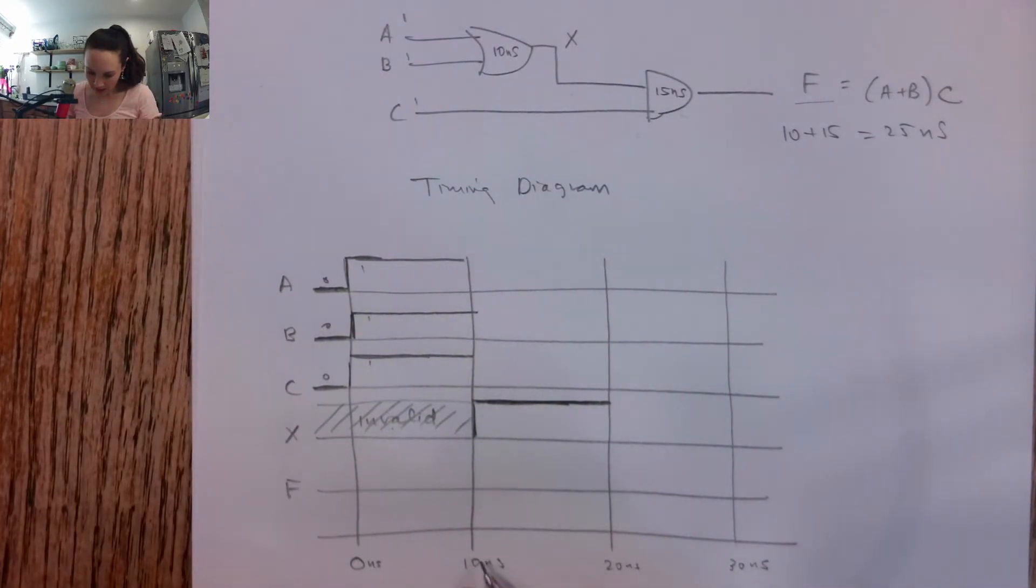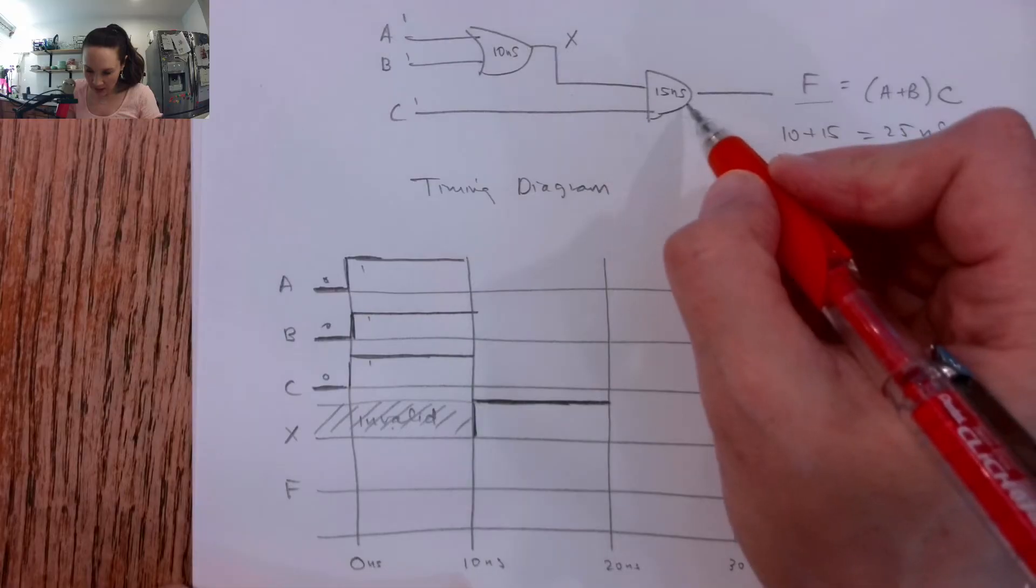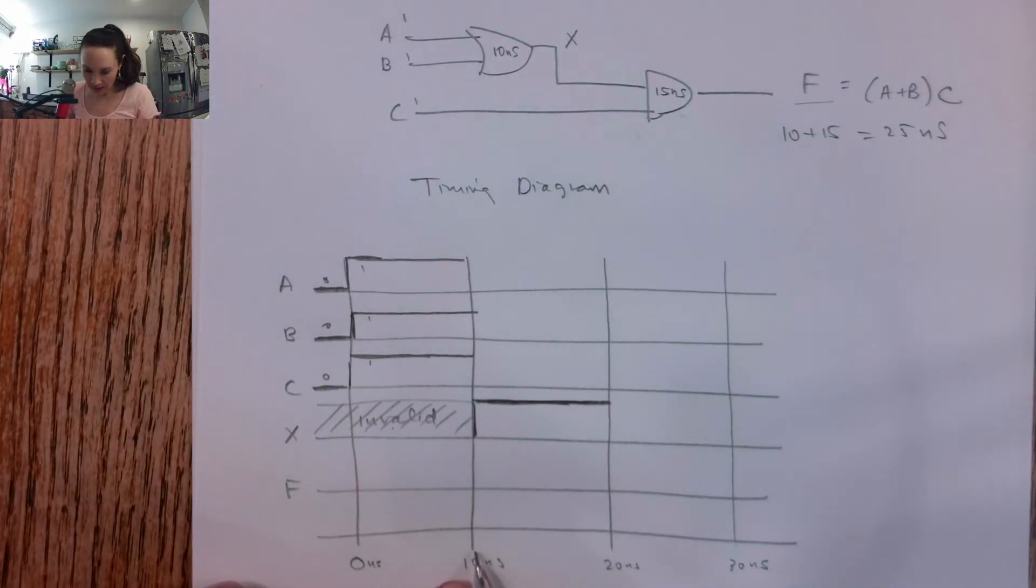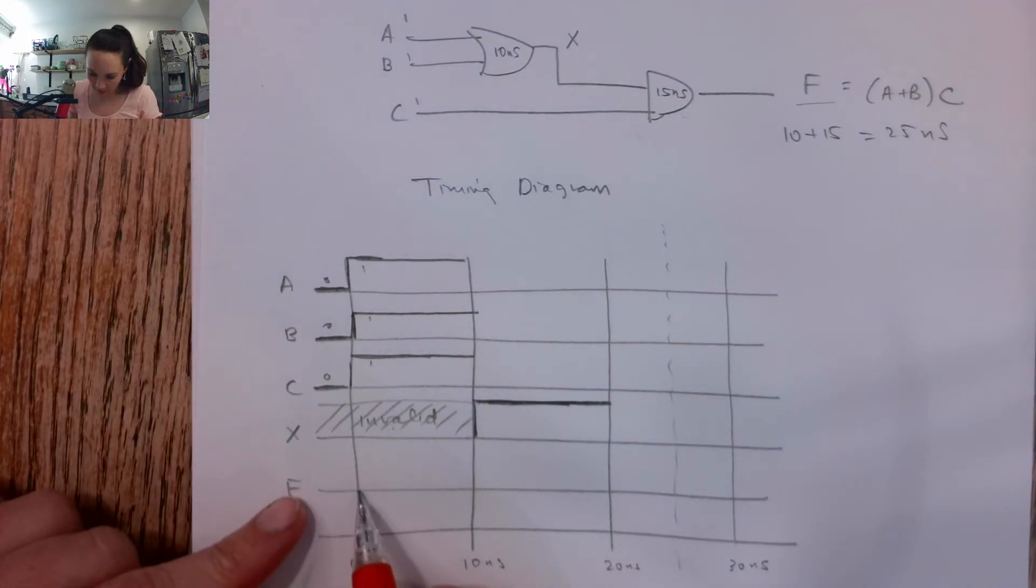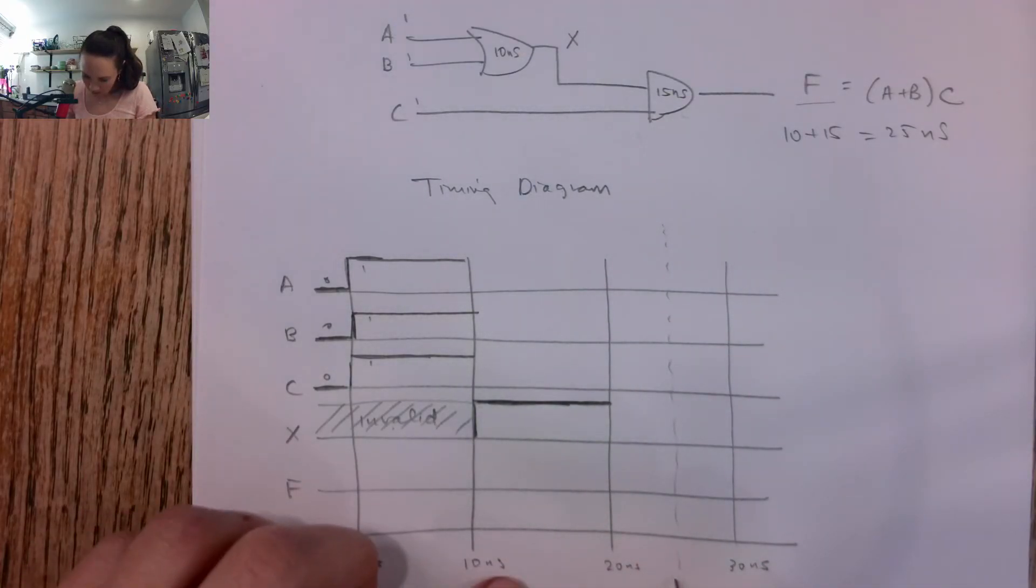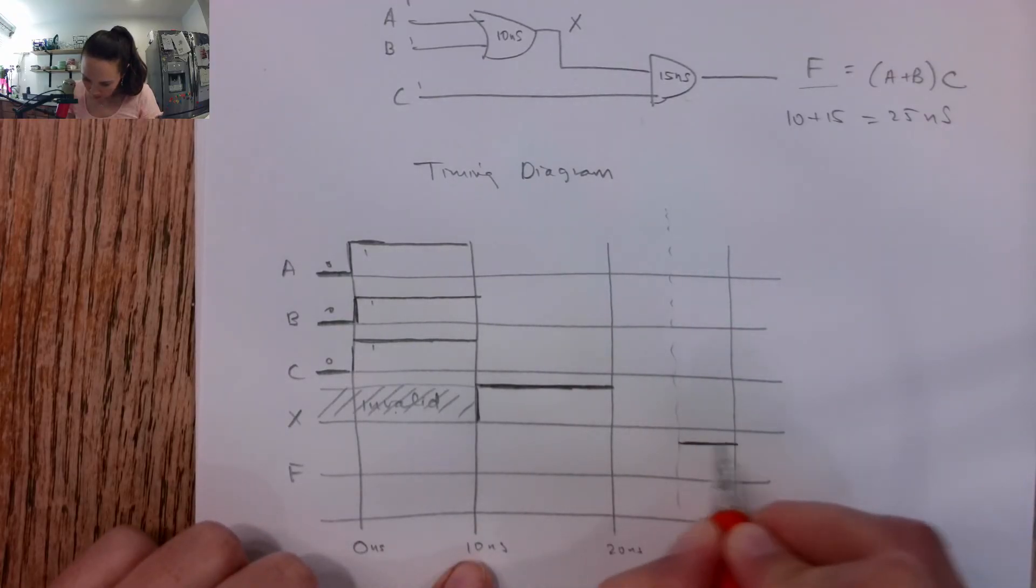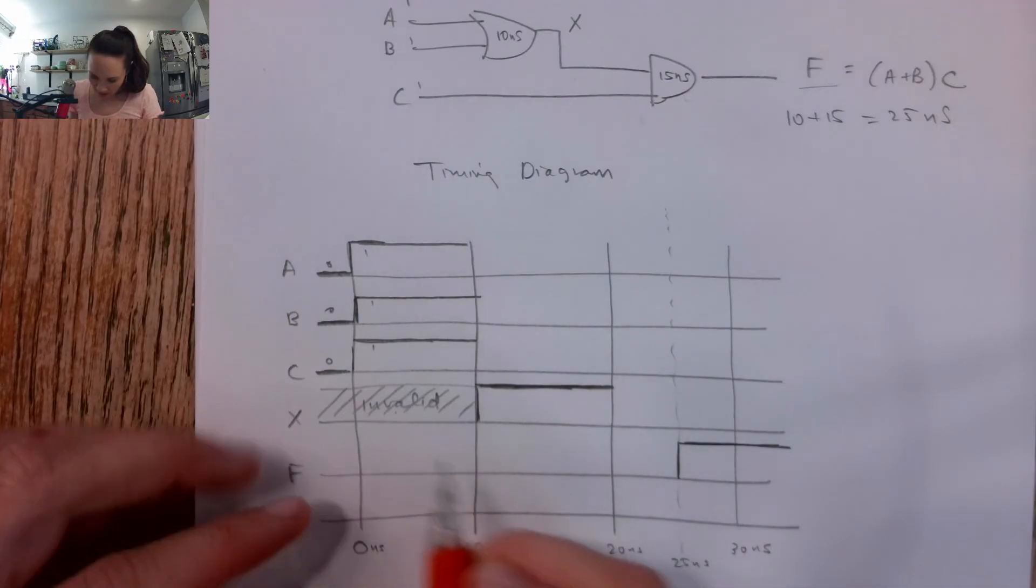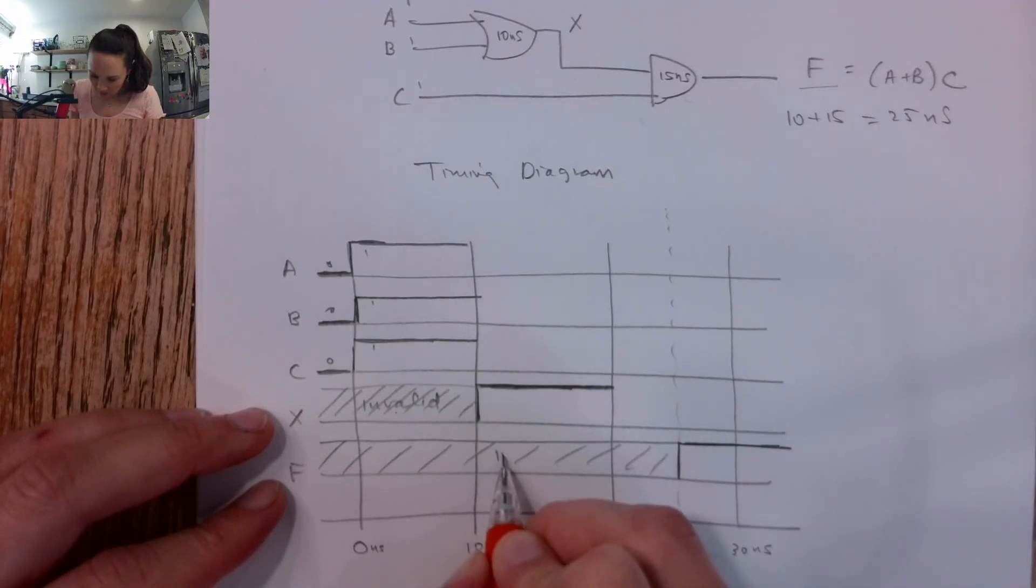So then at 10 nanoseconds, now this guy is ready to go into the AND. And this thing from 10 nanoseconds is going to need 15 nanoseconds after that to produce a valid output on F. So that means F here is, oh no, that's 10 plus 15 puts us at 25 nanoseconds right there. So then F is going to have a valid output here of 1 after 25 nanoseconds. And that means this region in time is all invalid.